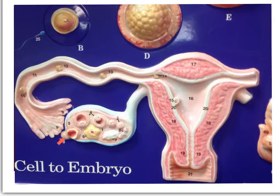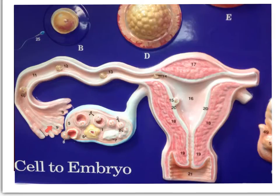Returning to our mature ovum that has been ovulated, we will also see the finger-like projections known as fimbriae. These finger-like projections will help pull the oocyte up into the fallopian tube. Most fertilization actually occurs within the fallopian tube.